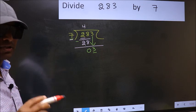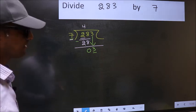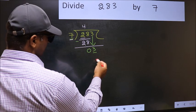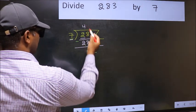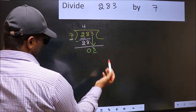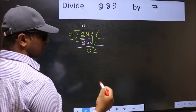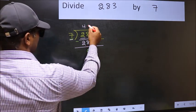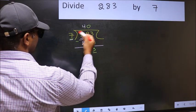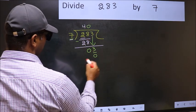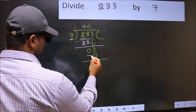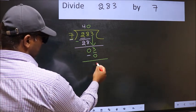Instead, what you should think of doing is what number should we write here. If I take 1 here, we will get 7, but 7 is larger than 3. So what we should do is we should take 0. So 7 into 0 is 0. Now you should subtract. 3 minus 0 is 3.